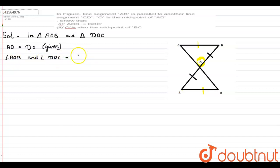They are vertically opposite to each other. So angle AOB and angle DOC are equal. Then we can say that